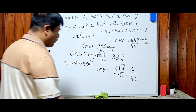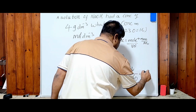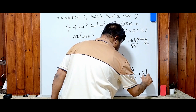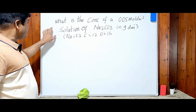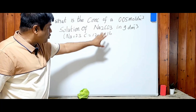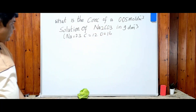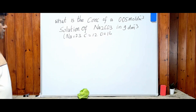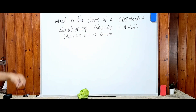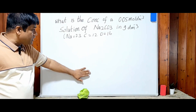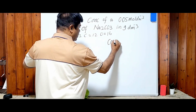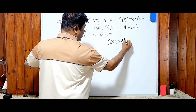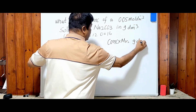So concentration = 4 ÷ 40 = 0.1 mol dm⁻³. Now one more question: what is the concentration of a 0.05 mol dm⁻³ solution of sodium carbonate in g/dm³? Here we need to go from mol/dm³ to g/dm³, so we use: concentration × Mr = g/dm³.